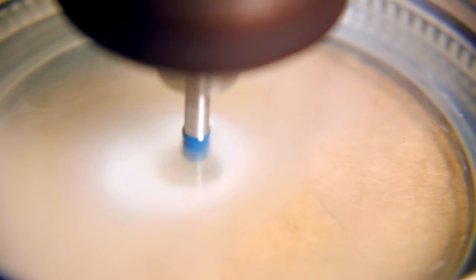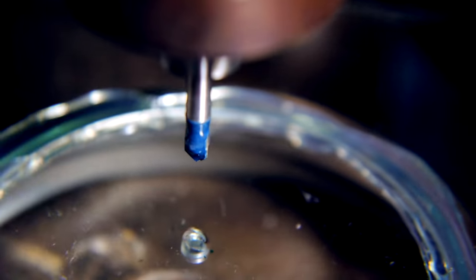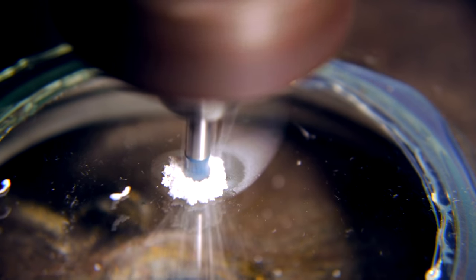As soon as the bit starts to make it through, stop drilling and flip the glass over. The hole can then be completed from the other side.